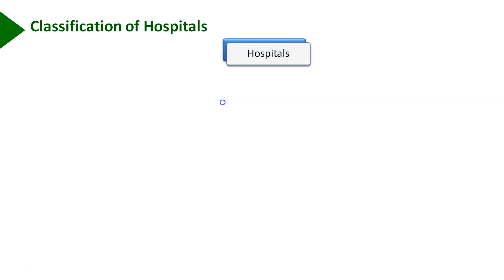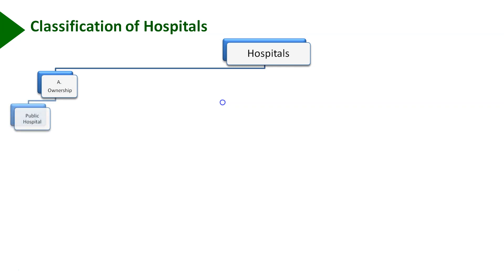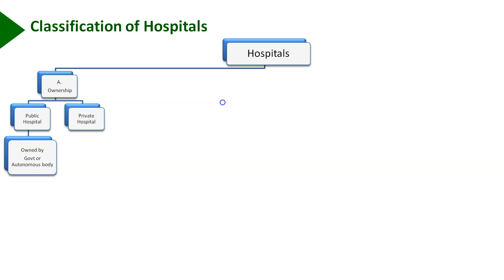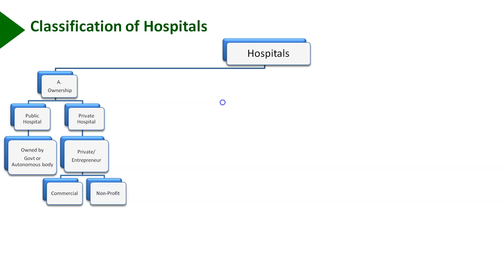Now let us understand the classification of hospitals into different categories. Hospitals are classified as per ownership. Under ownership, they may be classified as public hospitals, owned by government or an autonomous body, and private hospitals, which are run by a private body or an entrepreneur. Under private entrepreneur, hospitals are further classified as commercial and non-profit organizations.